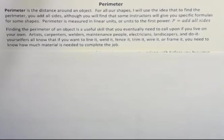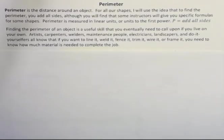Finding the perimeter of an object is a useful skill that you will eventually need to call upon if you live on your own. Artists, carpenters, welders, maintenance people, electricians, landscapers, and do-it-yourselfers all know that if you want to line it, weld it, fence it, trim it, wire it, or frame it, you need to know how much material is needed to complete the job.